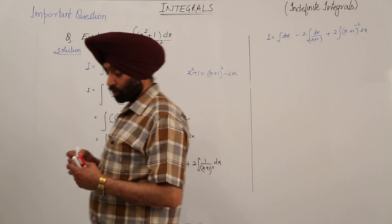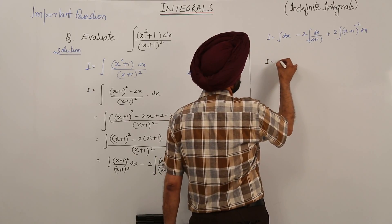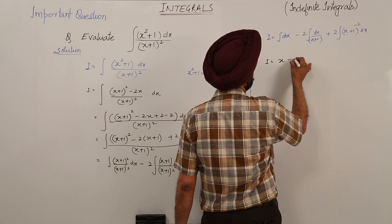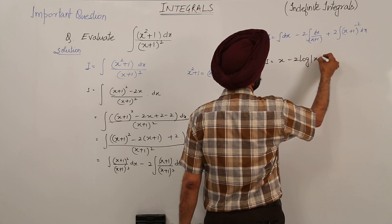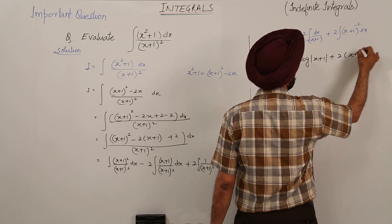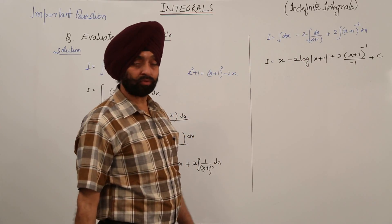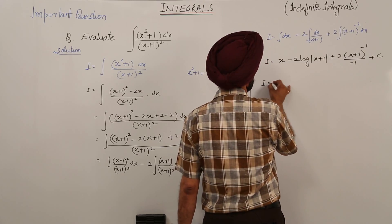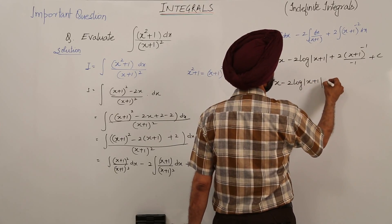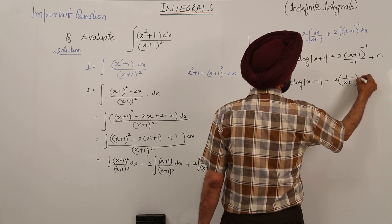Now integrating, we get: x minus 2 log|x + 1| plus 2 times (x + 1)^(−1)/(−1) plus C. Since minus 2 plus 1 is minus 1, the final answer becomes x minus 2 log|x + 1| minus 2/(x + 1) + C.